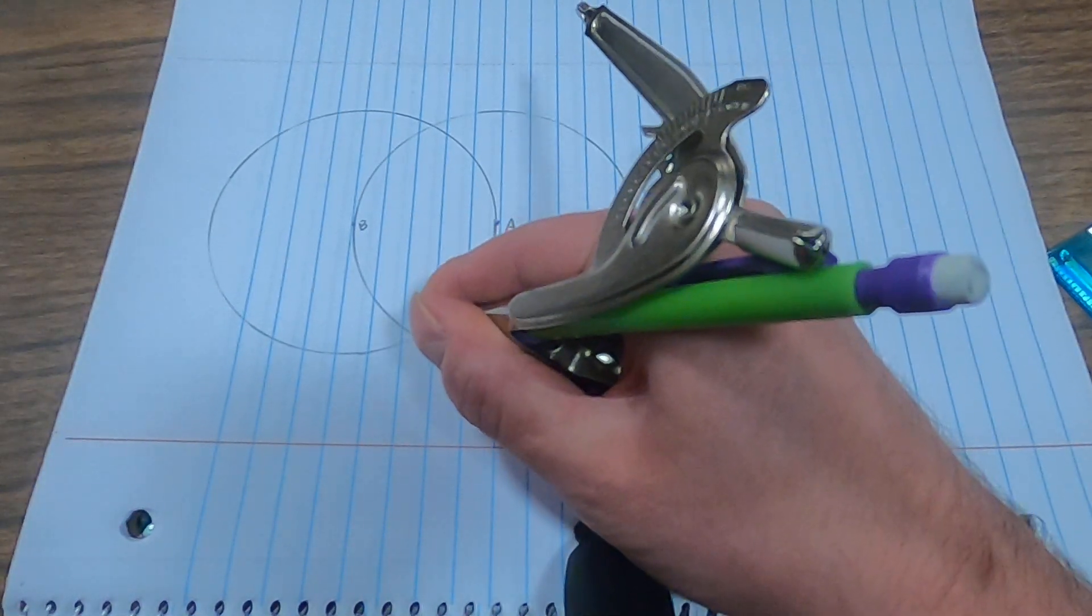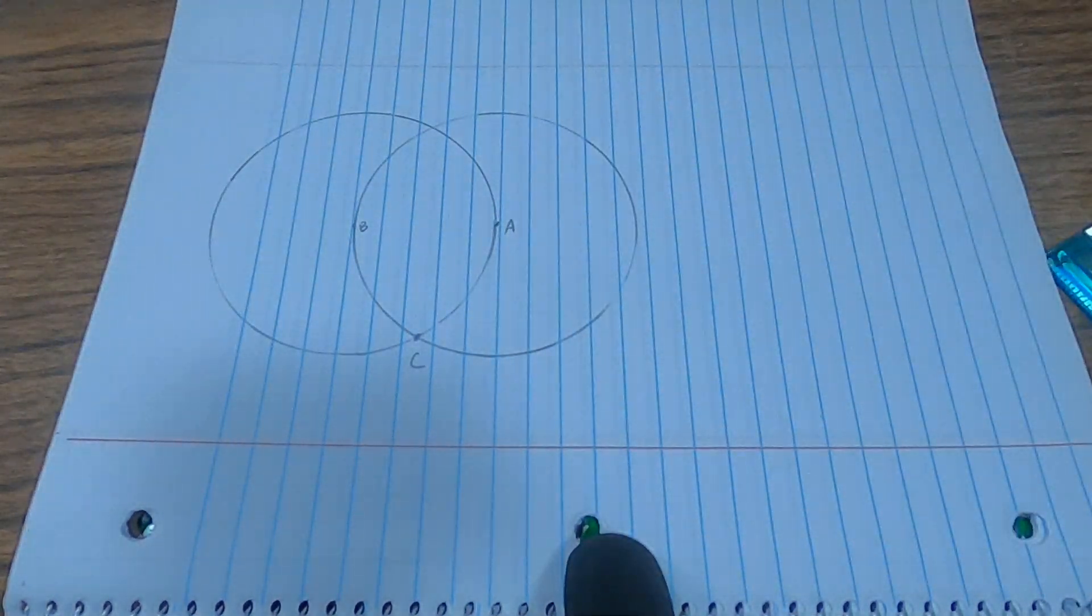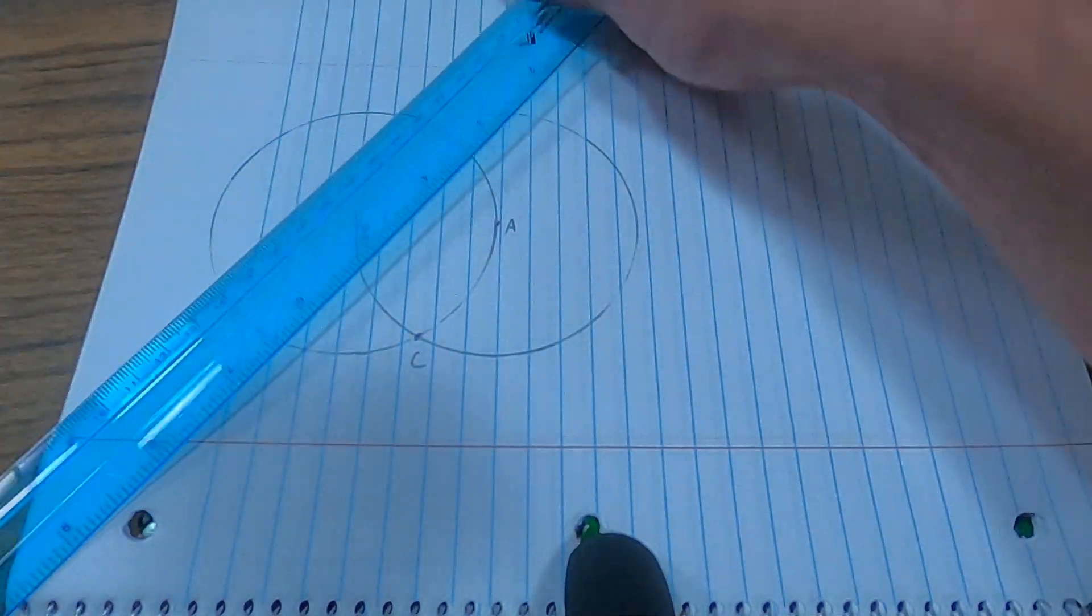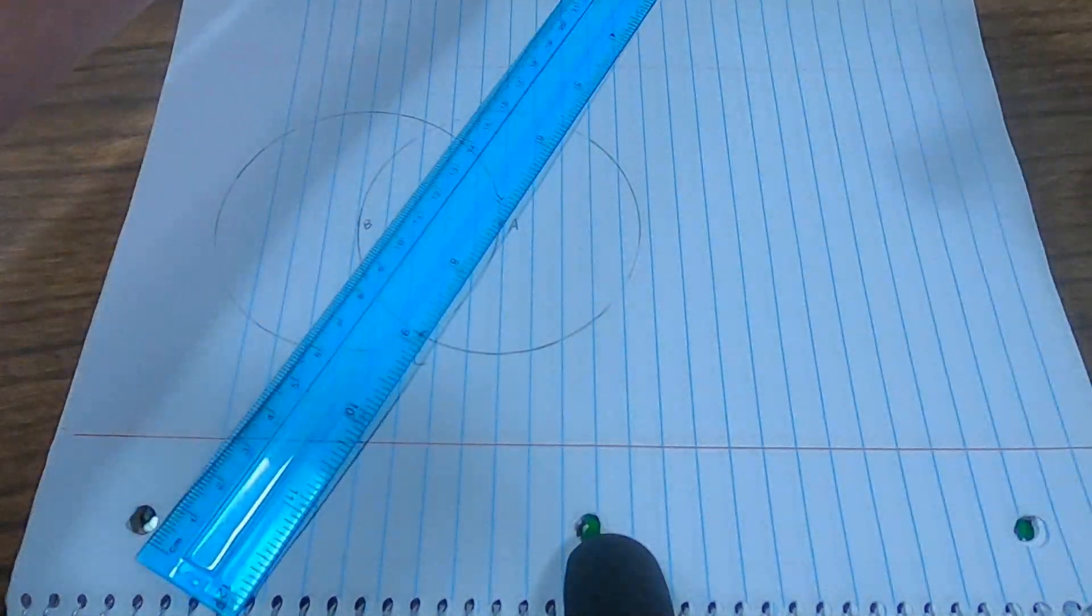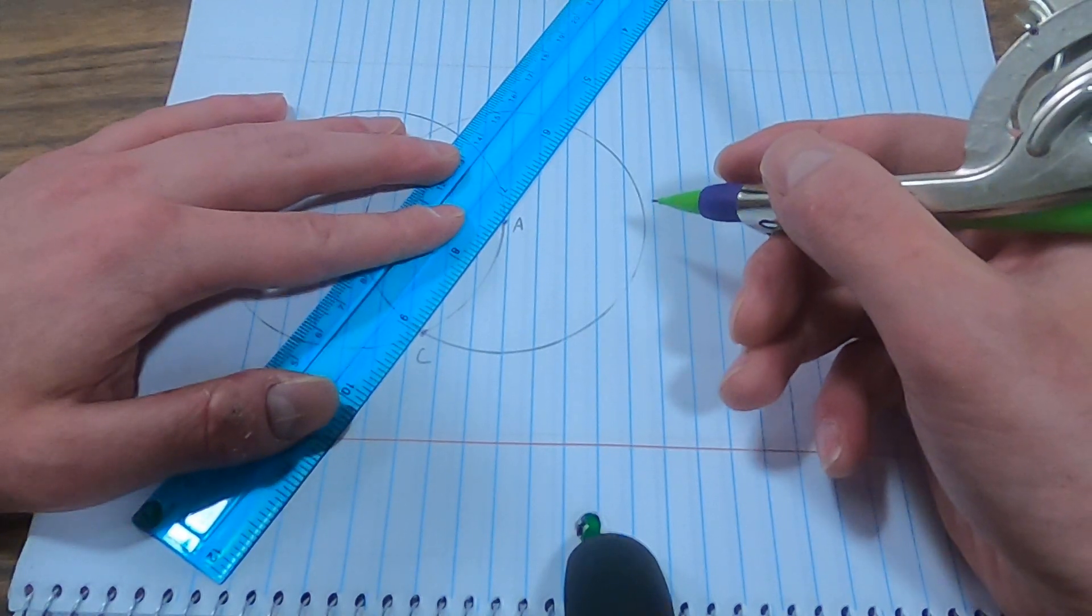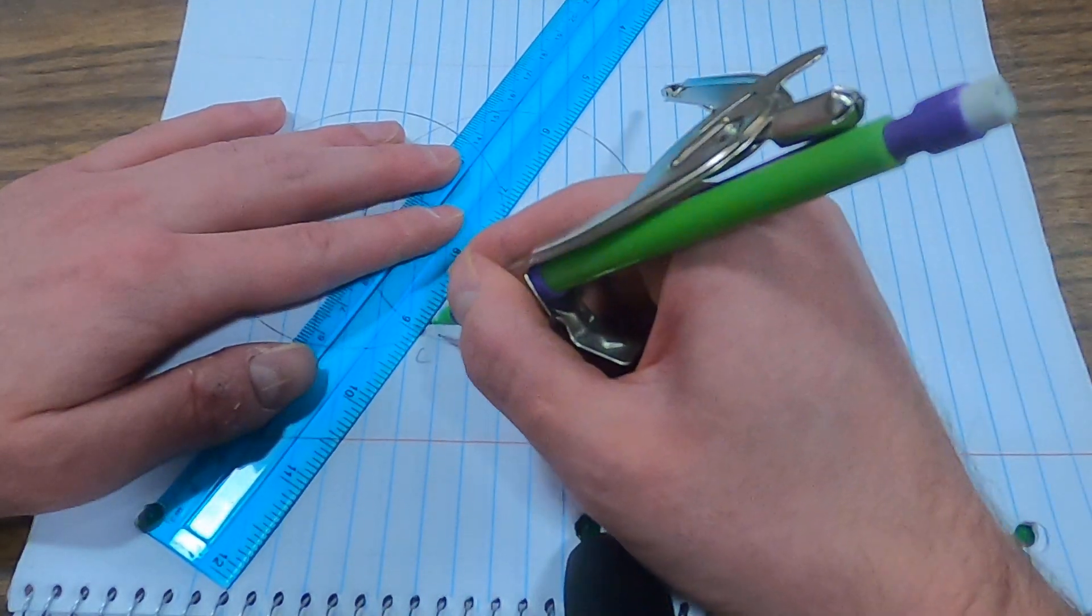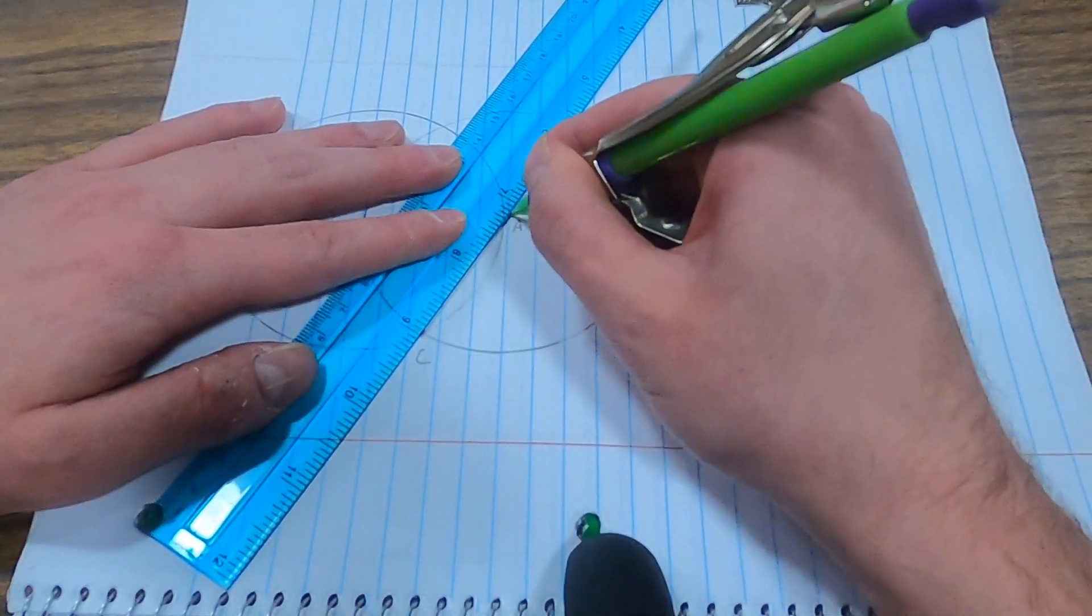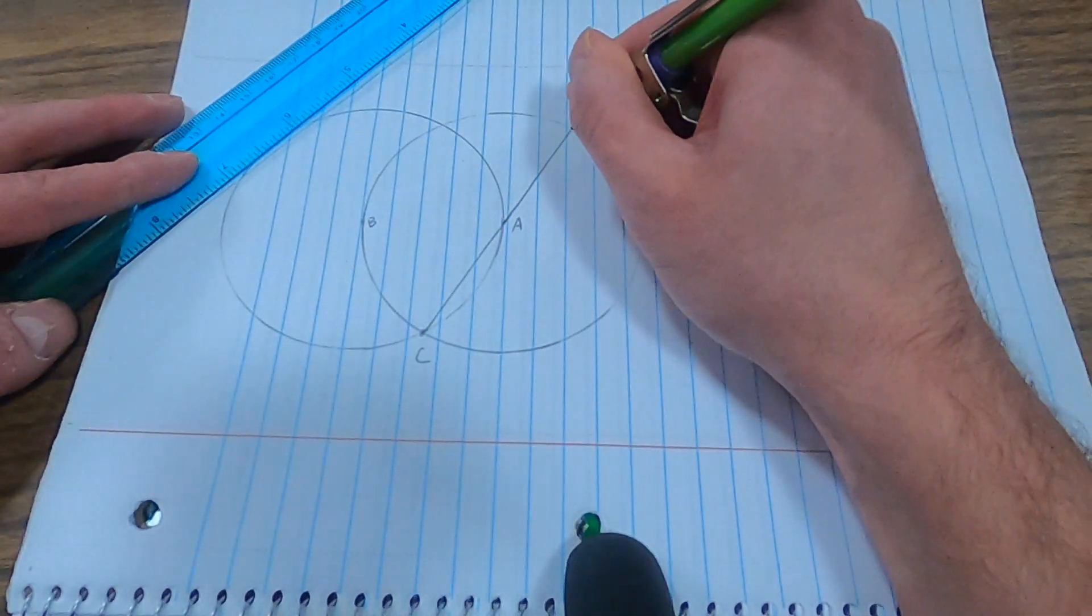I'm going to label this intersection point down here as C, and then we will draw a line through C, A that intersects on the circle. Let's do that here. I'm going to call that point D.